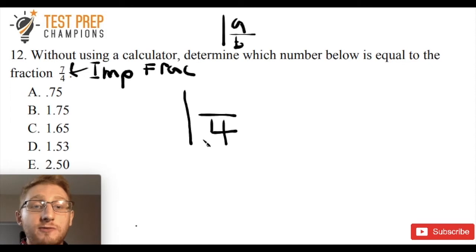So 4 times 1 is 4, and then what we do is we would think, well, 4 plus what gives me 7? In other words, 7 minus 4 is 3. So we've got 1 and 3 fourths.